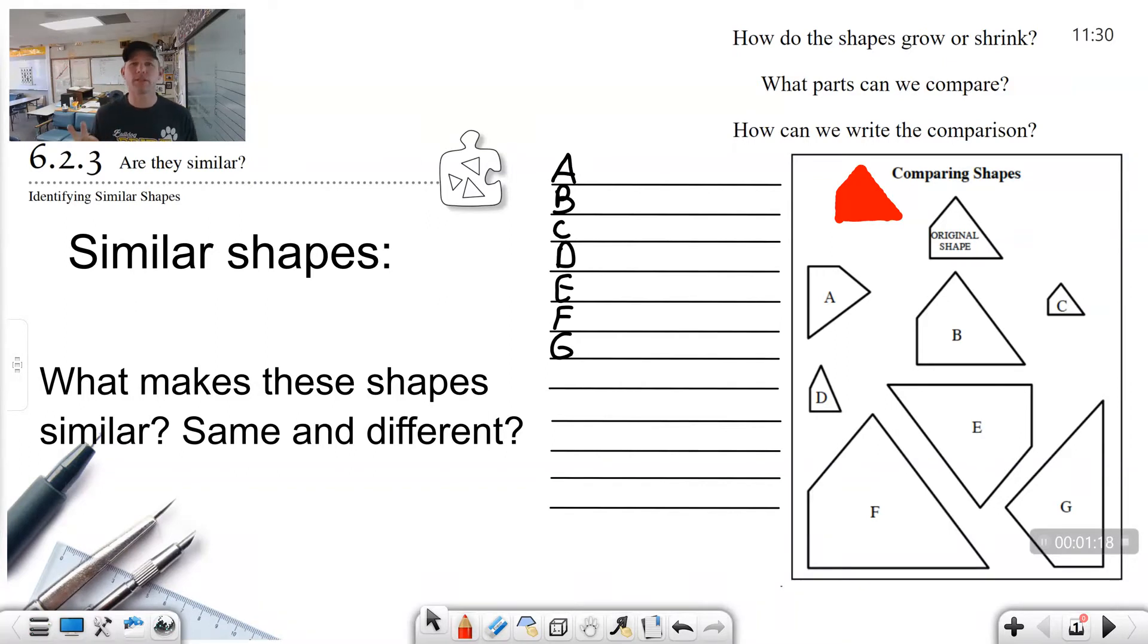The third thing that we noticed in 6-54 was that the angles were exactly identical. So today we have shapes ABCDEFG. I would like you to please label that on the left-hand side of your margin there. You have these shapes on the right and you have lines there on the left. Go ahead and write ABCDEFG because what we're going to do is we are going to compare the original shape.